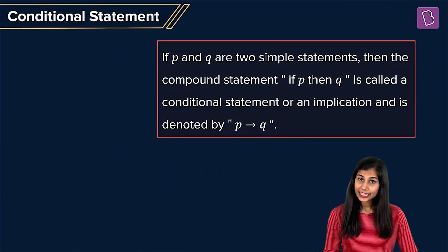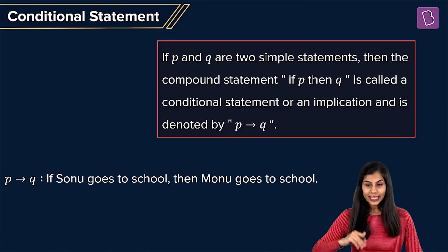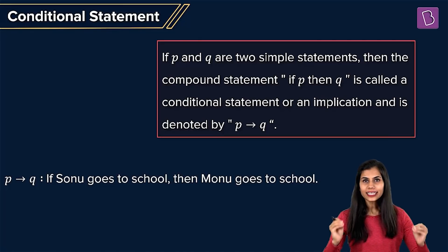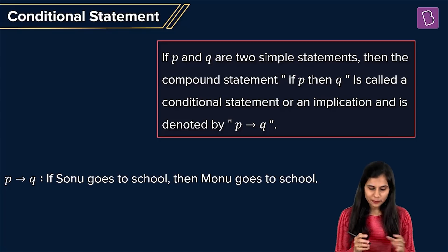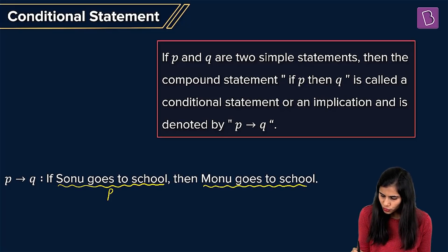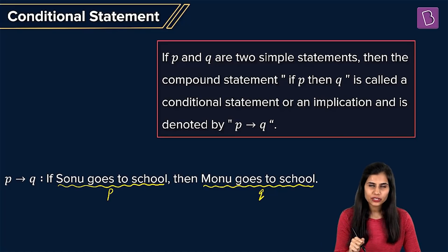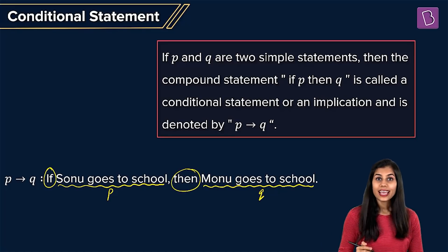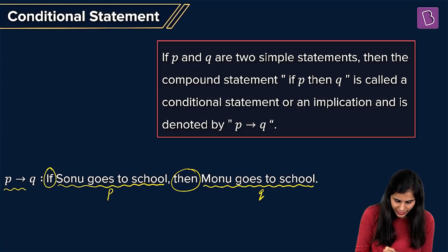Here is an example: if Sonu goes to school, then Monu goes to school. This is a compound statement formed with the phrase if-then. Its two component statements are 'Sonu goes to school,' let's call it P, and 'Monu goes to school,' let's call it Q. P and Q combine together with if-then, giving rise to the implication denoted by P implies Q.